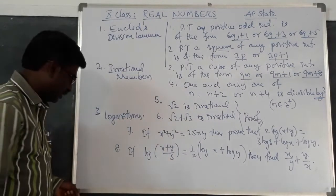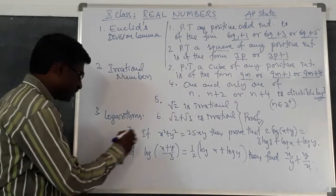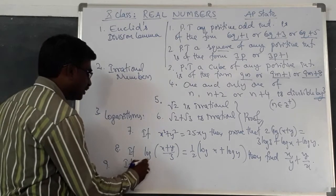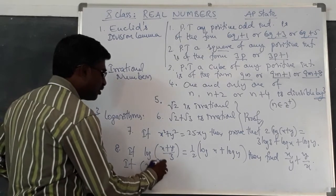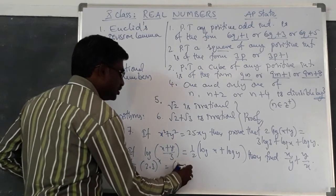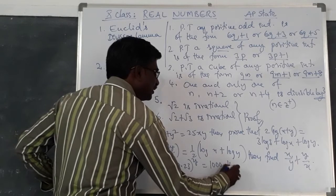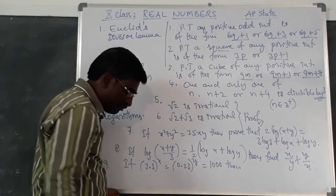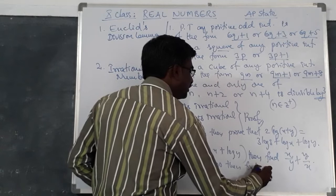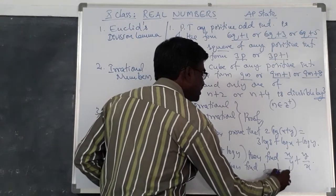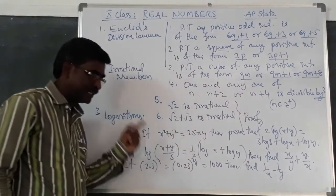This is the problem. Now finally, one more question under this. That is, if 2.3 to the power x equals 0.23 to the power y equals 1000, then what is the value of 1/x minus 1/y? That is the problem.